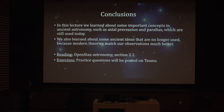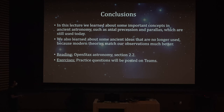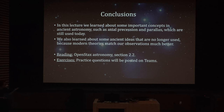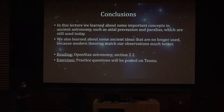In conclusion, in this lecture we learned about important concepts in ancient astronomy such as axial precession and parallax, which are still used today. We also learned about ancient ideas that are no longer used because modern theories match our observations much better. For reading, you can read section 2.2 of the textbook, and practice questions will be posted. See you next time.